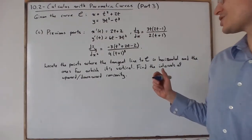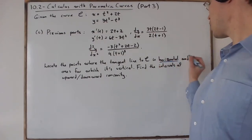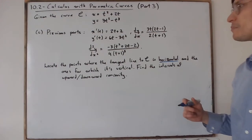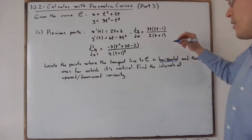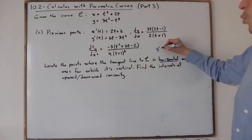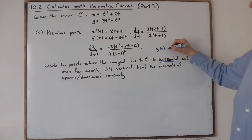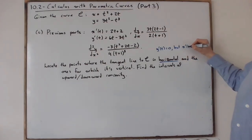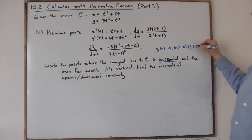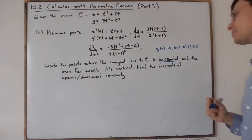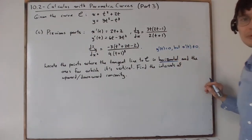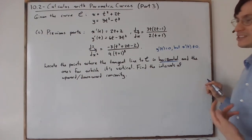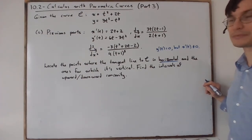Let's answer the first question: where is the tangent line horizontal? For a horizontal tangent line, you need y'(t) to be equal to 0, but x'(t) not equal to 0. If both of them are 0, you need another technique to find whether the tangent line is horizontal or not there.